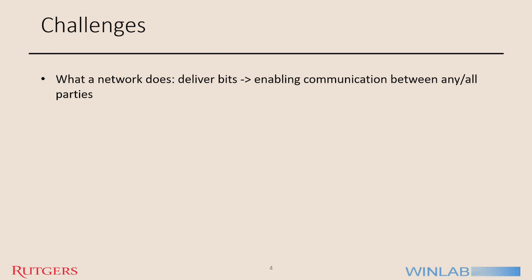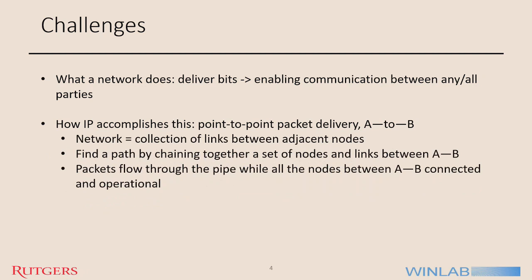Before discussing the problem, let us first discuss what a network is supposed to do. The work of a network is to deliver bits and enable communication between any or all parties. How does IP accomplish this? IP uses point-to-point packet delivery. If you have two points A and B, a network is created as a collection of links between edges and nodes, and it finds a path by chaining together a set of nodes and links between A and B. Packets flow through the pipe while all nodes A and B remain connected and operational.